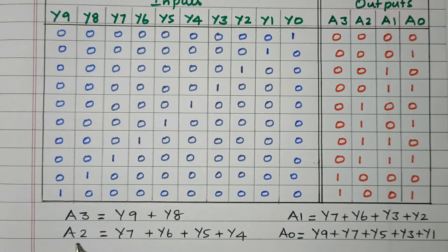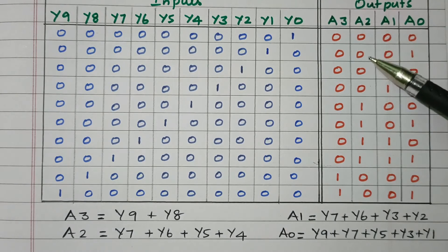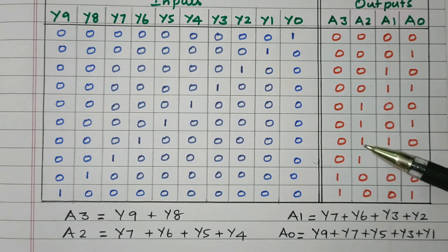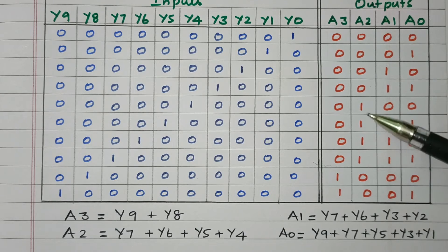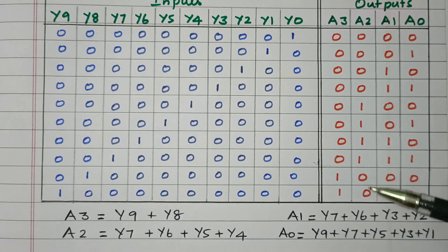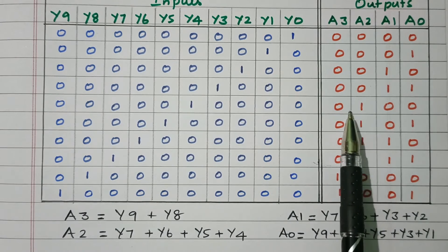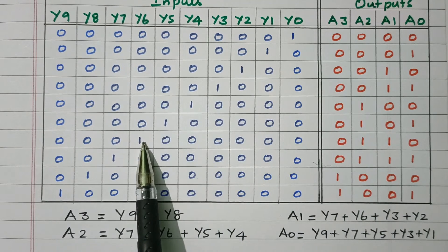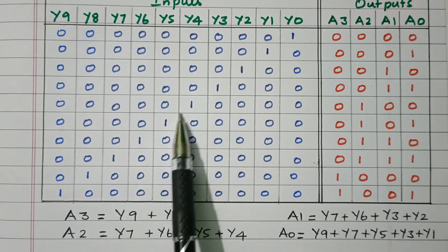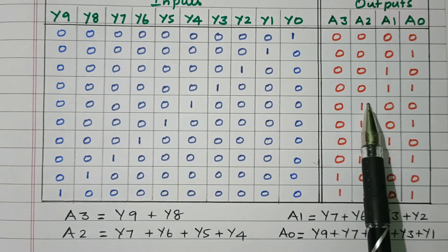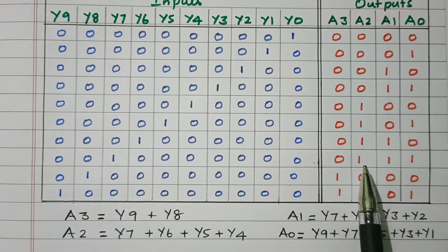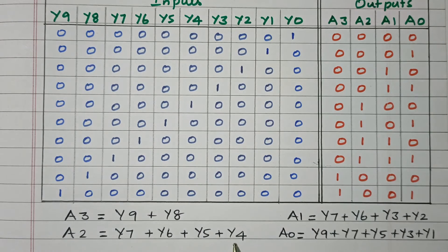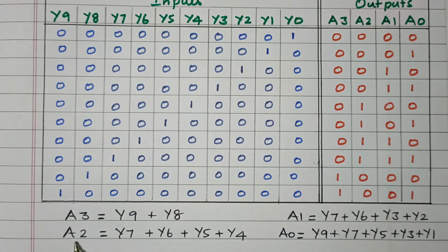Then we go to A2. Looking at the truth table for A2, the first rows are all 0s, then four rows are 1, then it goes back to 0. The four inputs where A2 is high are Y4, Y5, Y6, and Y7. These four are OR-ed together, so the logical expression for A2 is: A2 = Y4 + Y5 + Y6 + Y7.